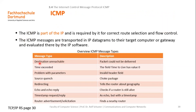For instance, destination unreachable means that the packet couldn't be delivered to the destination. Time exceeded means that the time-to-live expired during transmission of the data across the network. Echo request and echo reply are typically used to diagnose the network with commands like ping or traceroute, and other messages.